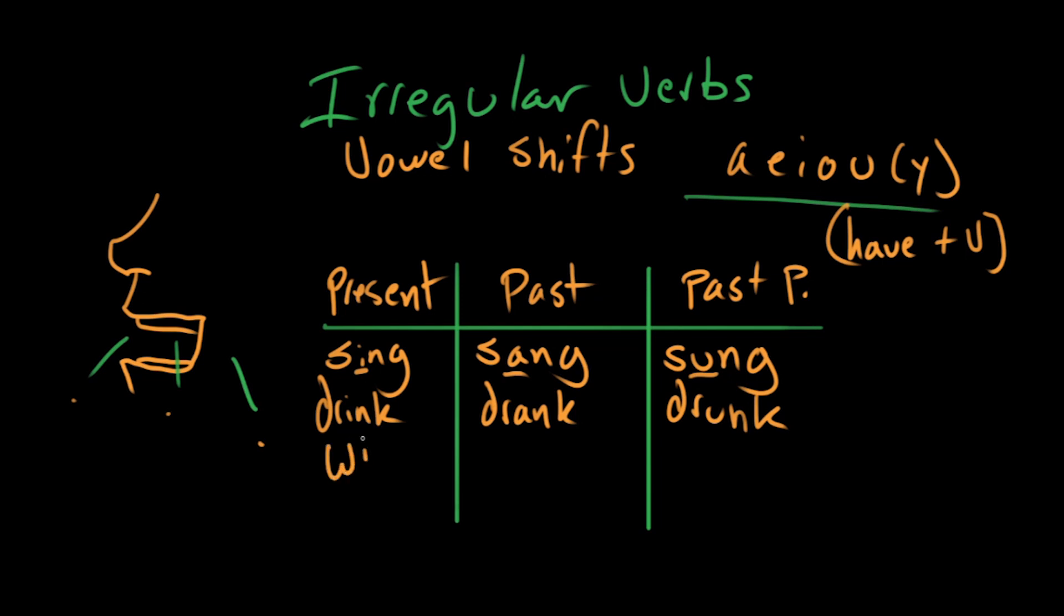So if you take a word like win, the present tense is win. The past tense is won. And the past perfect is also won. We had won the game. We won the game. So that vowel shift goes from ih to uh.